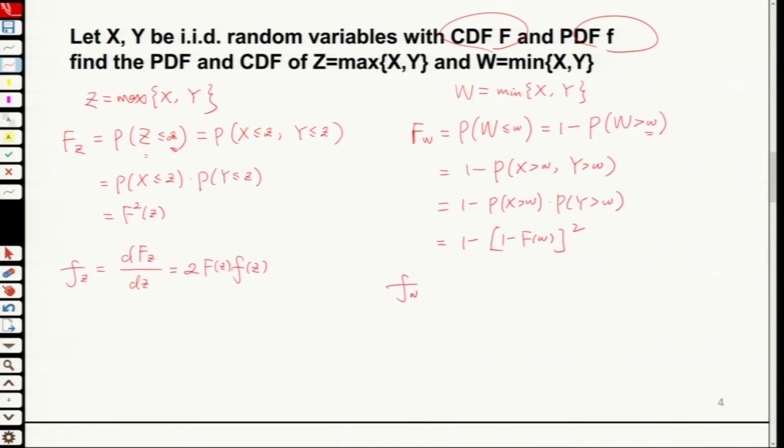Now in this case, if we want to get the PDF function, this will equal to 2, 1 minus F(w) times f(w). So this is for the maximum and the minimum function. If we transform the original function using the max and the min, this is the way that we derive the new PDF and CDF function. If the original one for X and Y are known, then we will be able to derive the PDF and CDF function for new random variables.